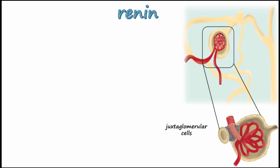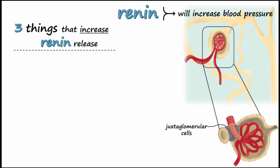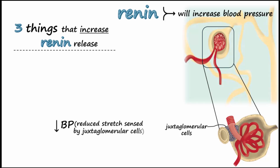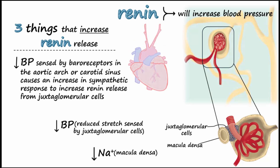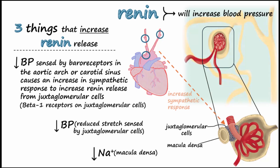Renin is an enzyme released from the juxtaglomerular cells of the kidneys that will lead to an increase in blood pressure. Three main things will cause renin to be released: when juxtaglomerular cells sense a reduced stretch of the afferent arteriole due to low blood pressure, when macula densa cells of the DCT sense low levels of sodium ions in the filtrate, or when a decrease in blood pressure sensed by baroreceptors in the aortic arch or carotid sinus leads to increased sympathetic output to beta receptors on juxtaglomerular cells, increasing renin release.